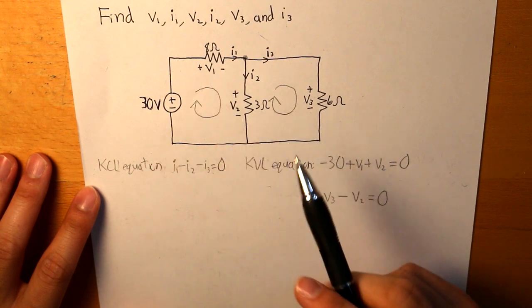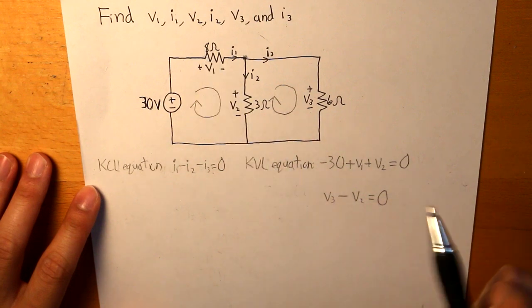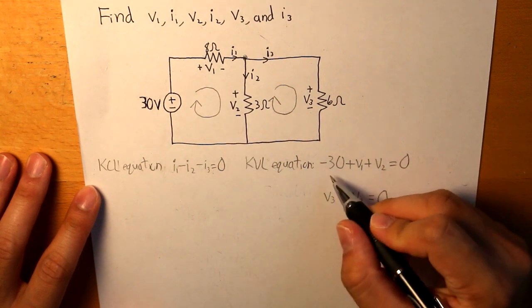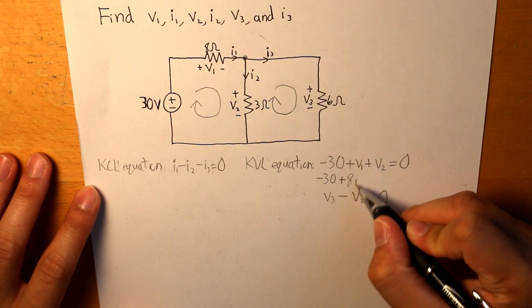So first for V1, in Ohm's law, for V1, that is equal to I1 times 8 Ohms. So what we have here is we're going to have 8 times I1.